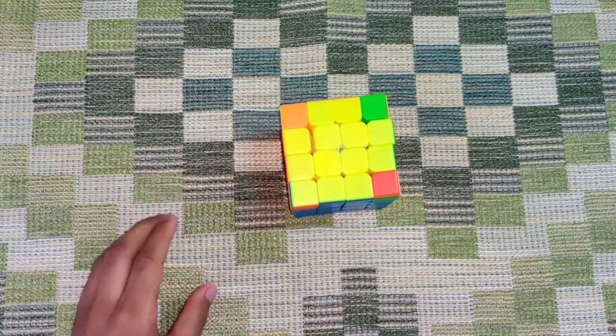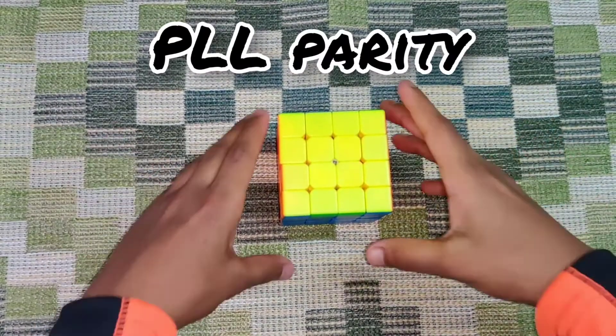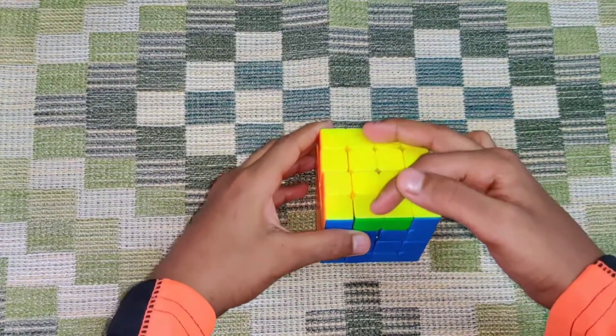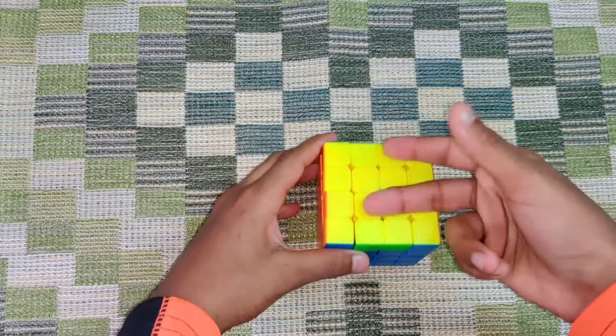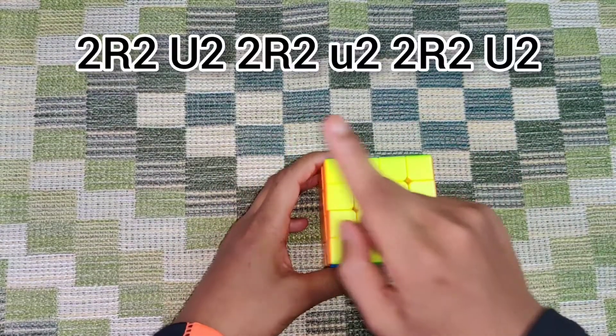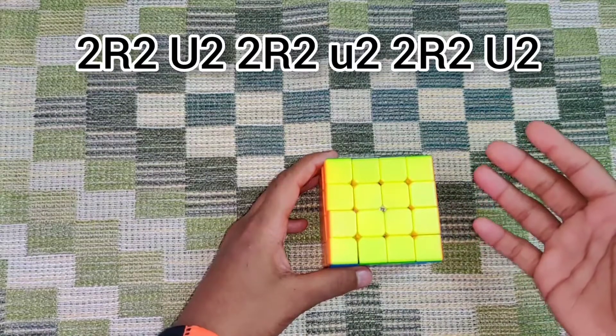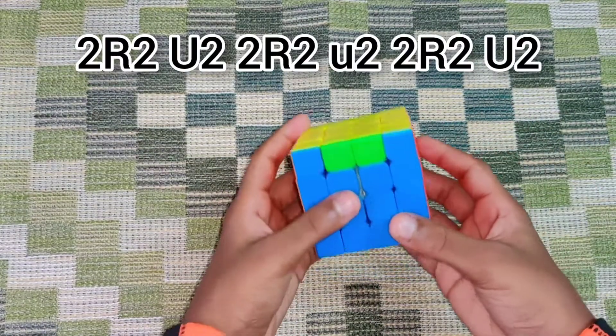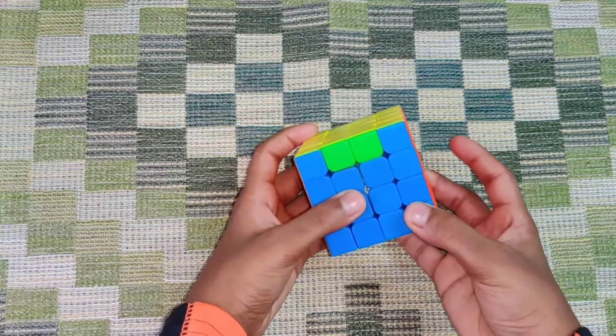Okay, next I'm gonna show you guys how to do the PLL parity. PLL parity is when these two edges are just swapped around. I'll have the algorithm on the screen, but it's better to just look at how my hands are moving and how the pieces are moving around.